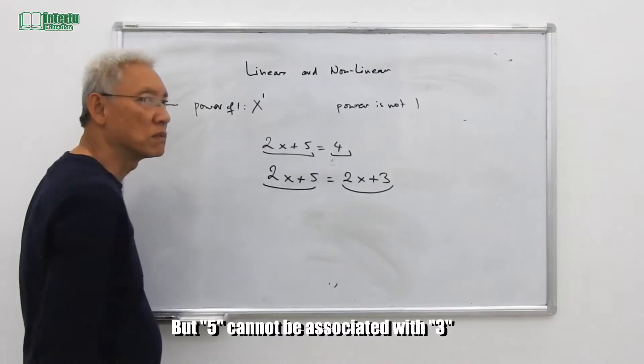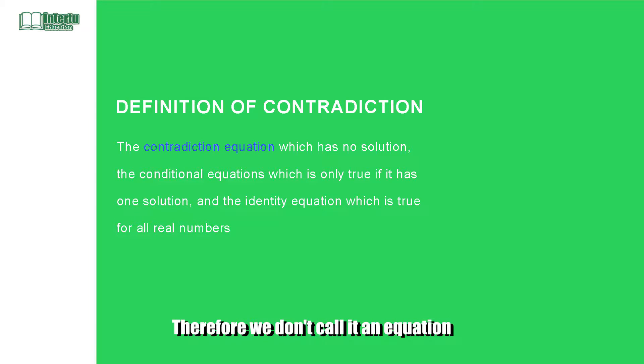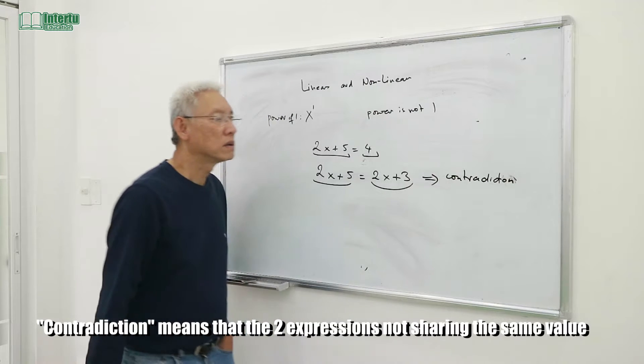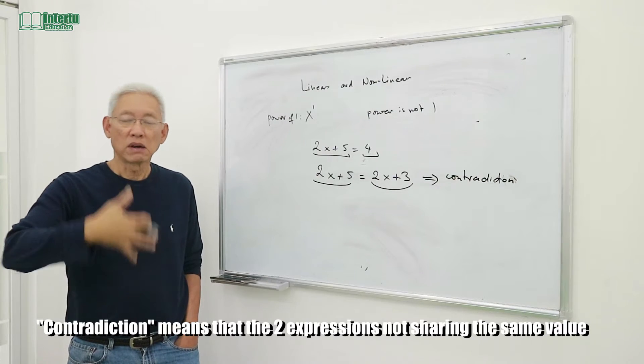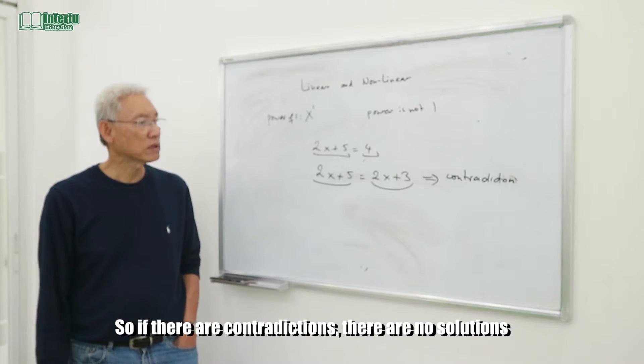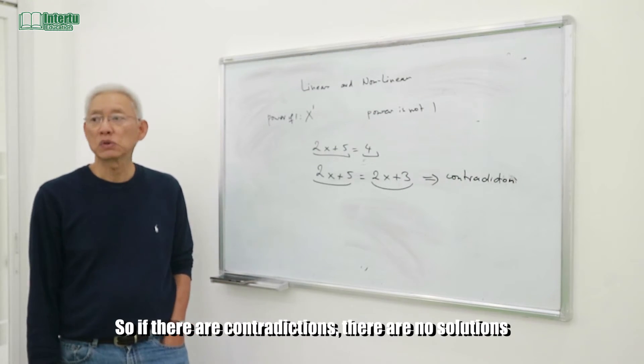Therefore we don't call this an equation; we call this one a contradiction. In contradiction, that means you have two expressions not sharing the same value. So if you have a contradiction, there is no solution.